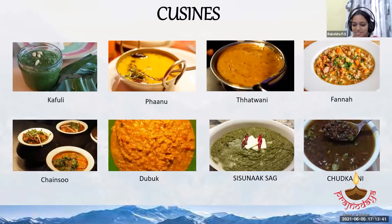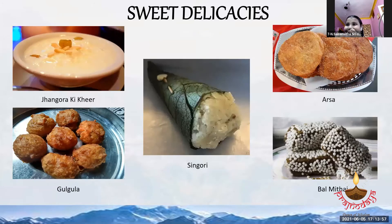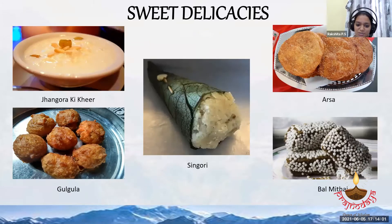Now, the yummy cuisines of Uttarakhand: Khanu, Chatwani, Dubke, Sisnu, Kasag, Kafuli, and Chainsu — yummy, right? All of us want to go there and taste! And there are three delicacies: Balmita, Gulgura, Jhangora ki Kheer, and Singori.